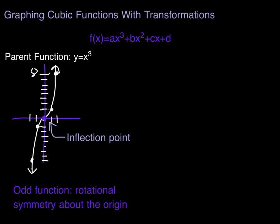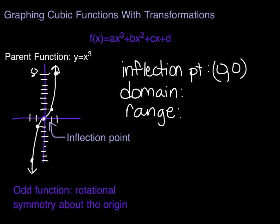So some key things that we might want to list about the parent function. The inflection point, you're going to be asked to write that down. So the ordered pair there is (0,0). I might ask you for the domain and range. So for any cubic function, the domain is all real numbers. It looks like it's pointing up and down, but it's actually pointing up and a bit to the right and pointing down and a bit to the left. So our domain is negative infinity to positive infinity. I can cube anything I want. And the range, which should be very clear, is negative infinity to positive infinity as well.